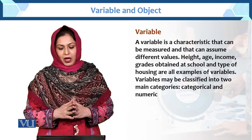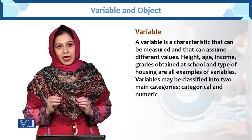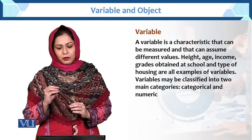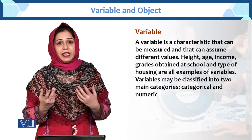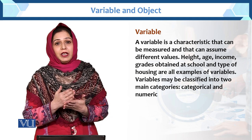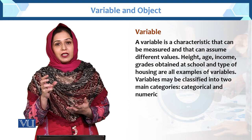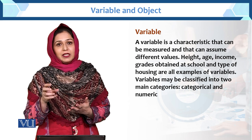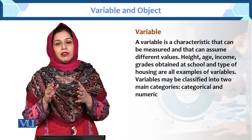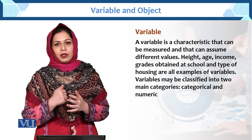A variable is the characteristic that can be measured and that can assume different values. Basically, kya variable? Aap uska naam dekho — variable — it means vary kar raha hai. Kya cheez? Characteristics. Woh characteristics jisay hum measure kar sakti hain aur uski different values hum assume kar sakti hain — that is called the variable.